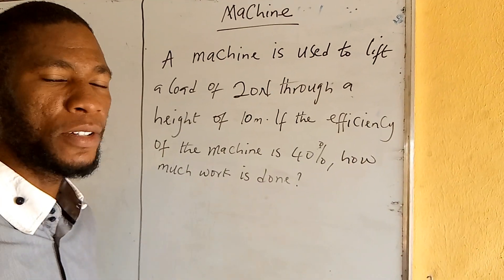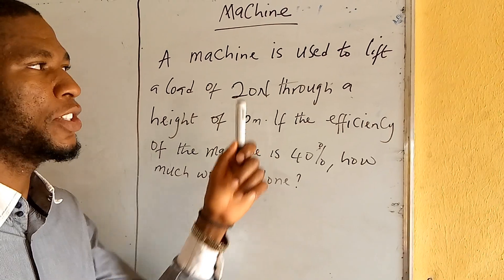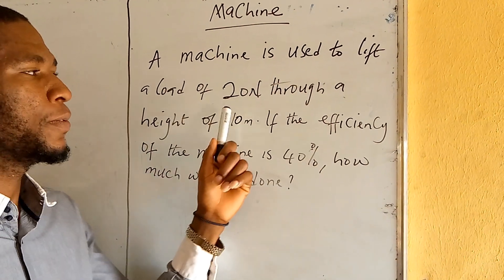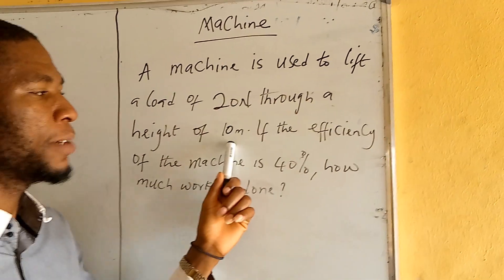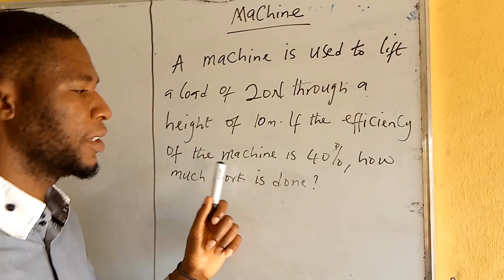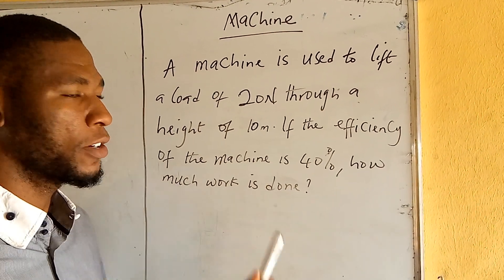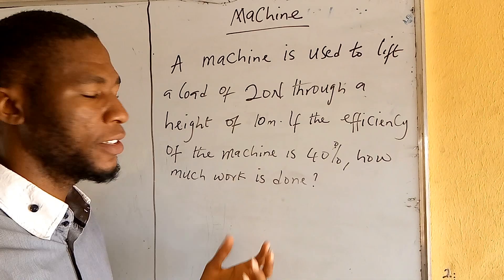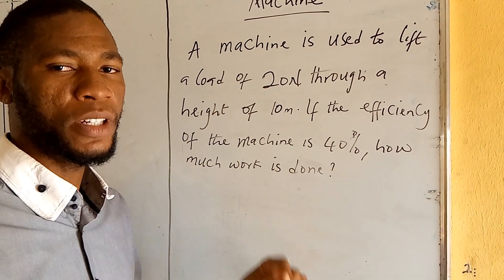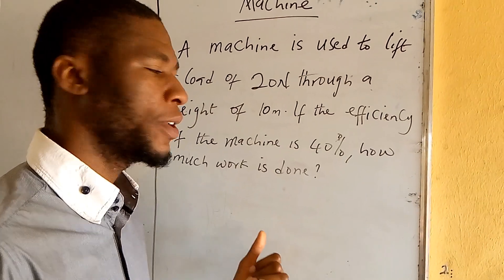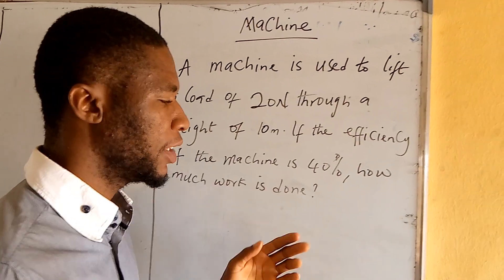In our next example, we are going to deal with this question: a machine is used to lift a load of 20 Newton through a height of 10 meters. If the efficiency of the machine is 40%, how much work is done? This question has to do with work output and work input, and we are looking for the work input.